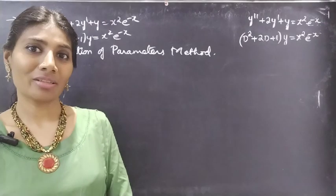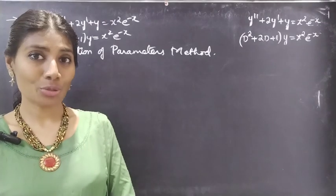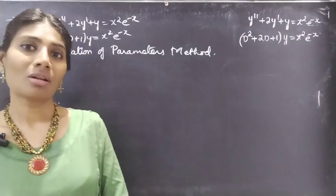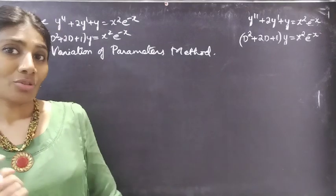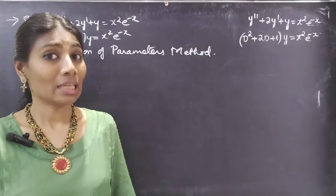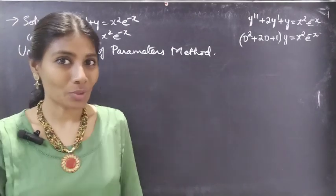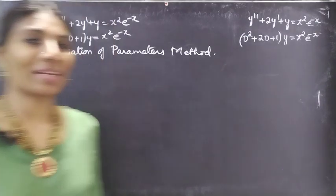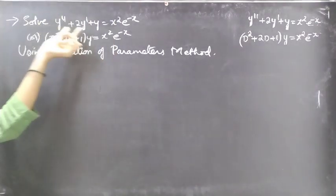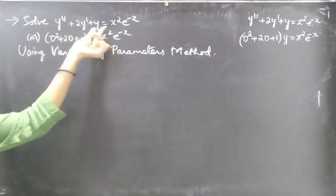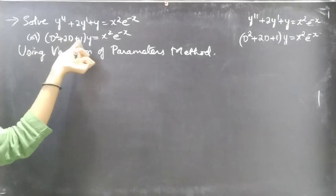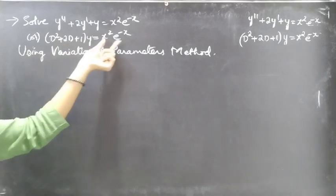Hello everyone, this is Zia Kalpana. In this video we are going to solve a differential equation using the variation of parameters method, part 2. The problem is: solve y'' + 2y' + y = x²e^(-x), or equivalently (D² + 2D + 1)y = x²e^(-x).